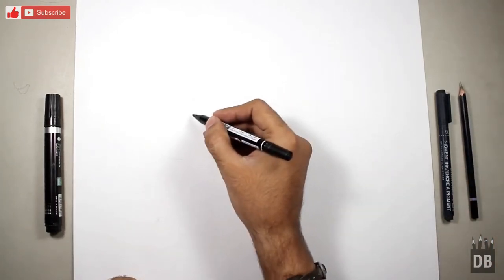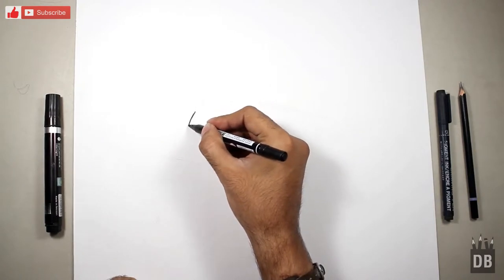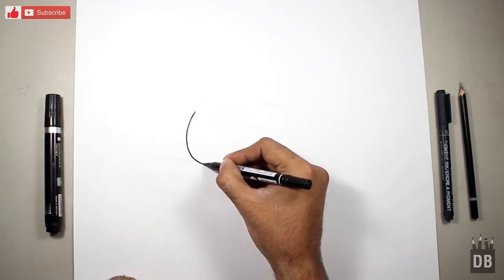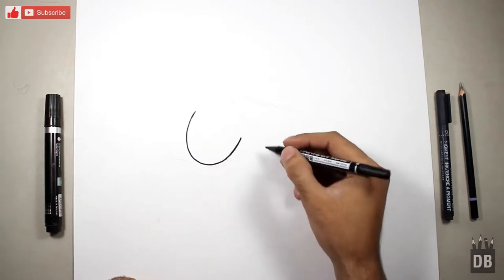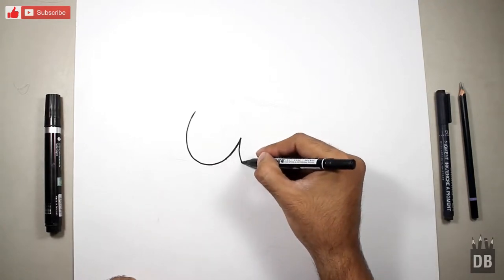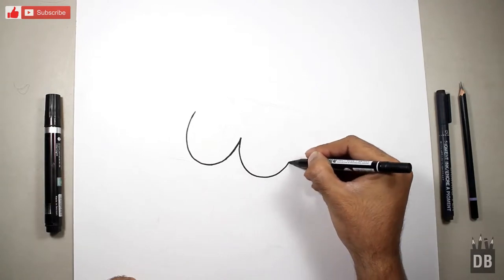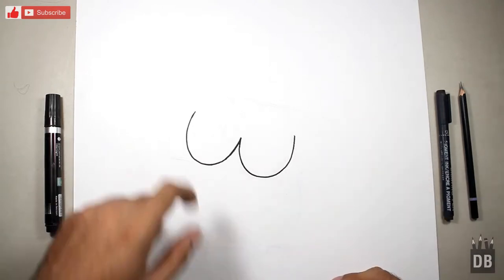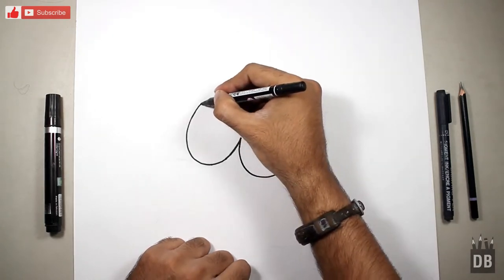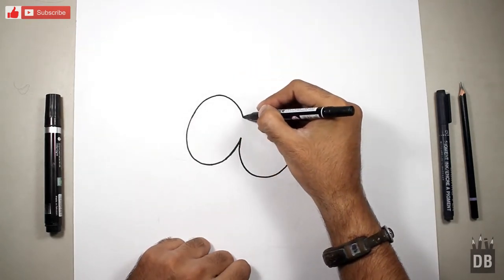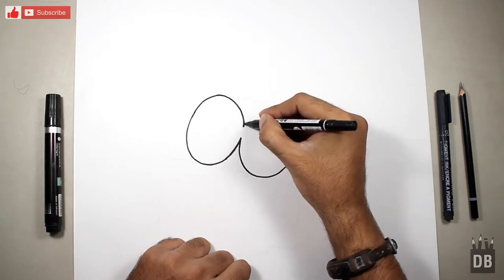You have to make a big W. The W is ready and now we have to make another W in opposite direction.